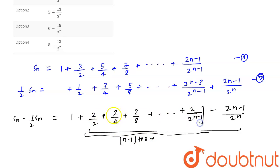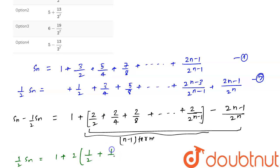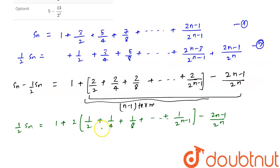So (1/2)Sₙ = 1 + 2·(1/2 + 1/4 + 1/8 + ... + 1/2^(n−1)) − (2n−1)/2^n. If we look carefully, the bracketed part is a GP with first term a = 1/2 and common ratio r = 1/2.